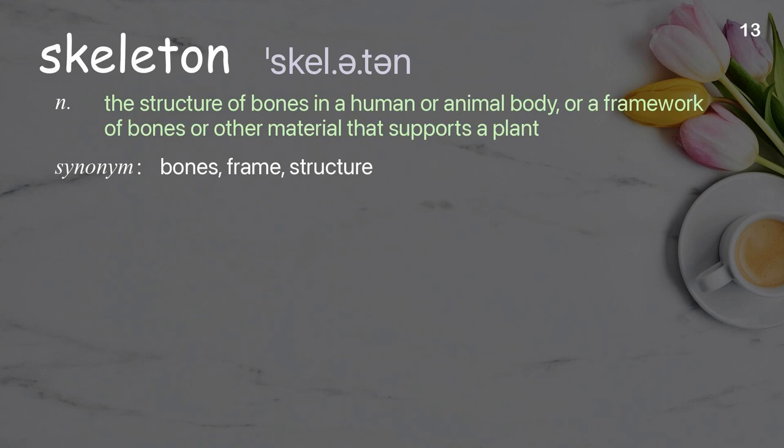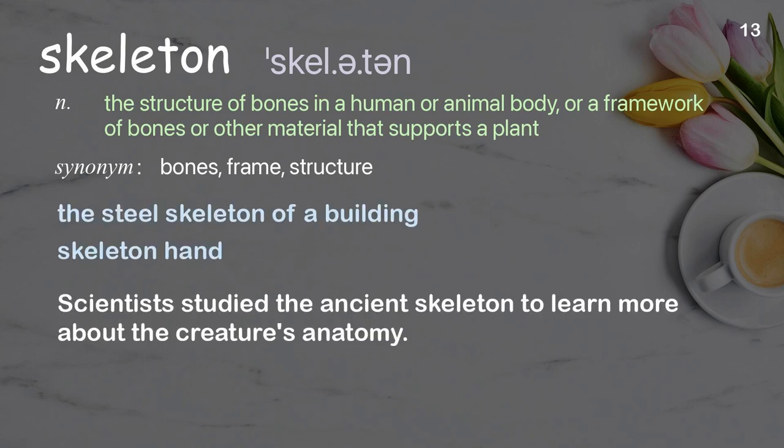Skeleton: the structure of bones in a human or animal body, or a framework of bones or other material that supports a plant. Examples: the steel skeleton of a building, skeleton hand. Scientists studied the ancient skeleton to learn more about the creature's anatomy.